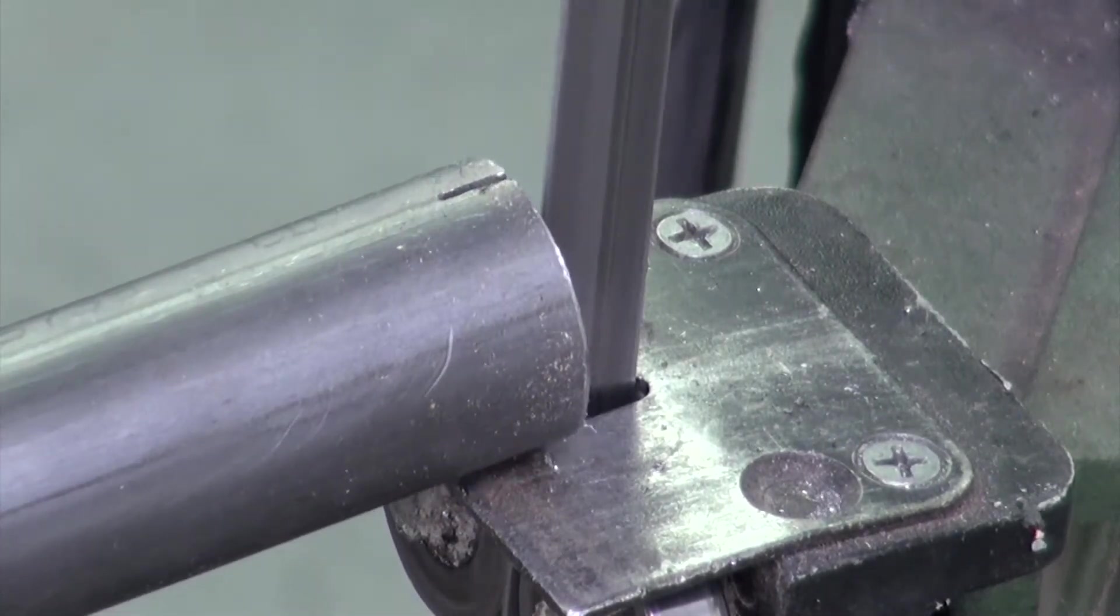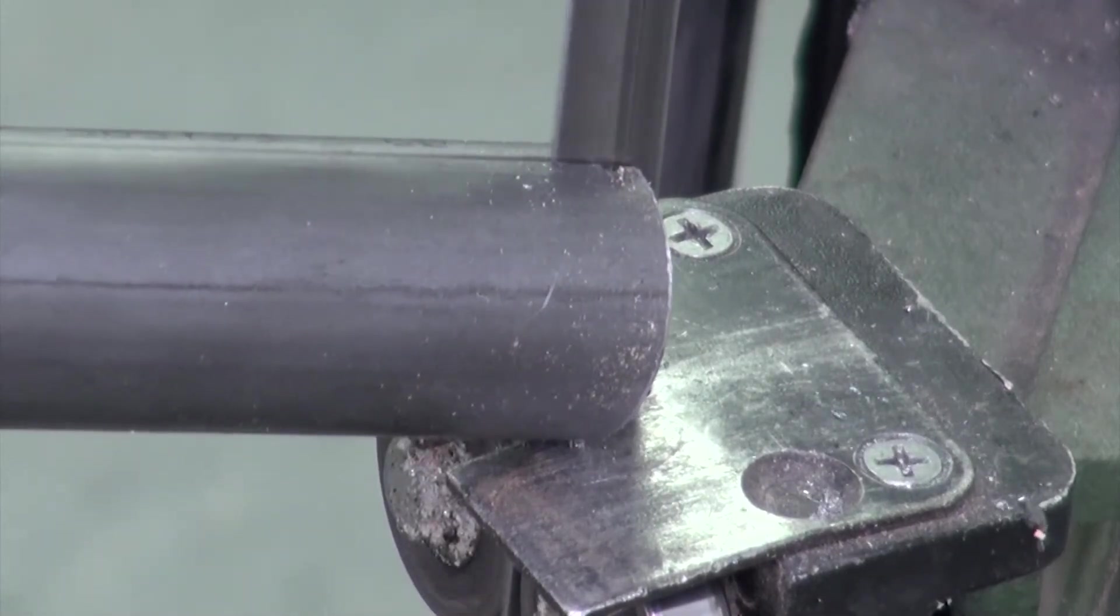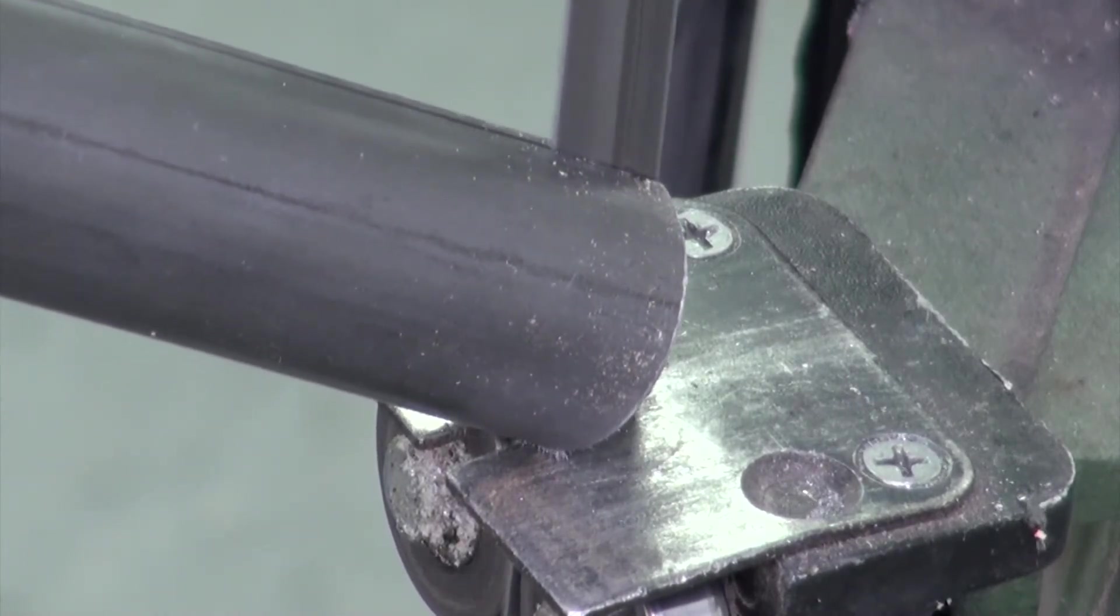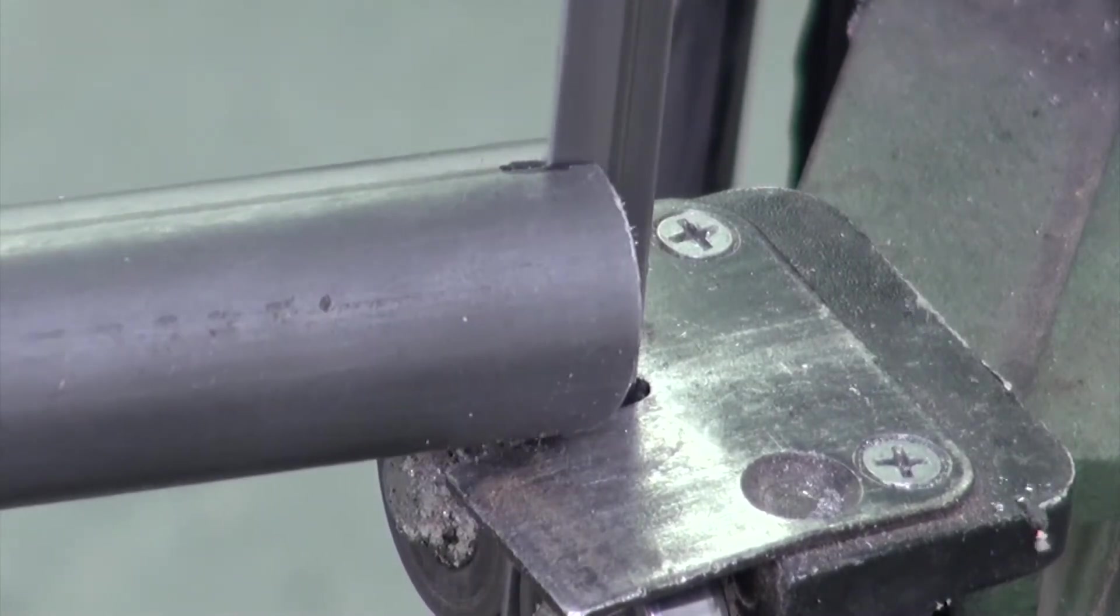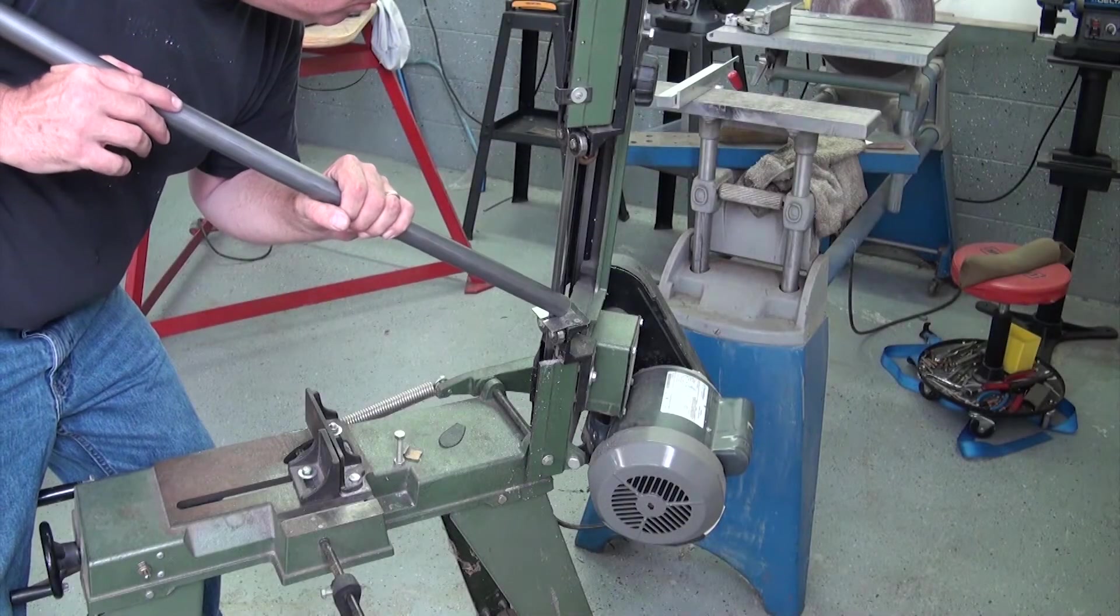Now the bandsaw blade can be inserted into both cuts simultaneously. As you begin the cut, continuously raise the tube so that you cut on only one side of the tube at a time. After you've made substantial progress, flip the tube over and repeat the process on the other side.